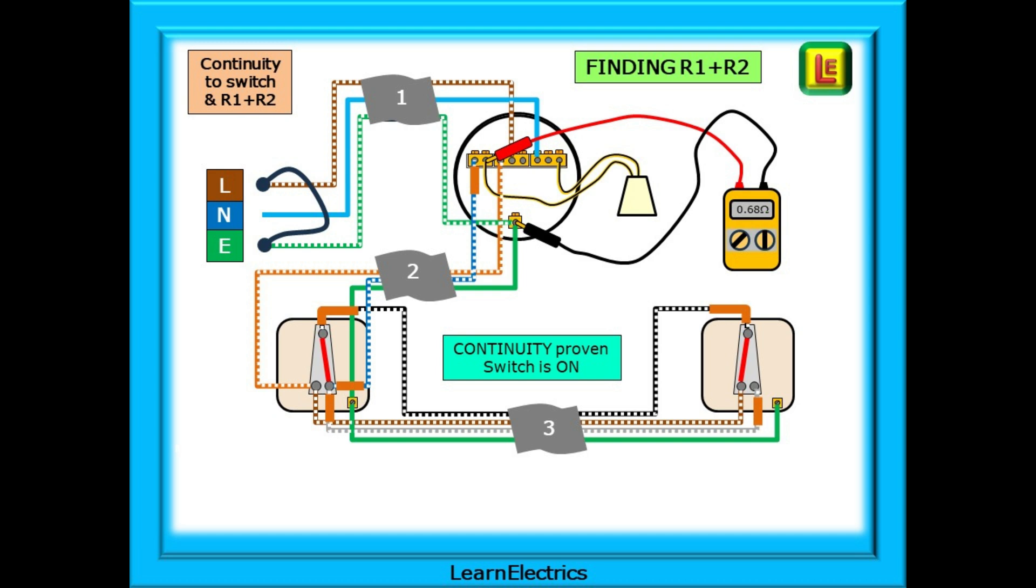The white dotted lines show that only part of this circuit is included in the testing. Now we've operated the left hand light switch to simulate a lights on scenario and we have continuity from the switch block along the blue switch wire to the first switch. Through the switch to the black wire and on to the second switch. Through switch two onto the brown and back to switch number one.